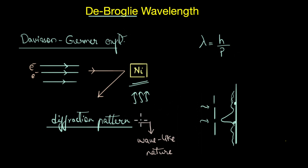And the wavelength of the electrons calculated from this diffraction pattern matched the de Broglie's wavelength given by the equation lambda equals h by p.